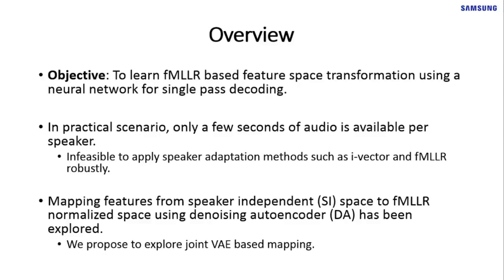To handle this, mapping speaker-independent (SI) features to FMLLR-normalized features using denoising autoencoders has been proposed, but this does not show consistent improvements. We propose to explore joint VAE-based mapping.